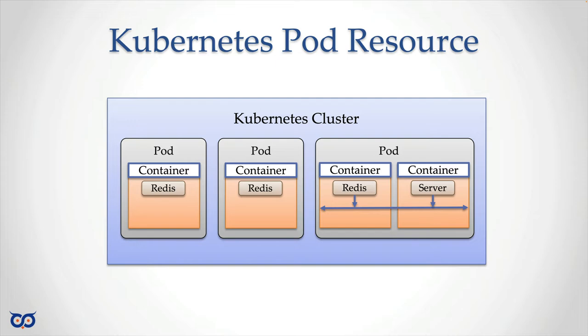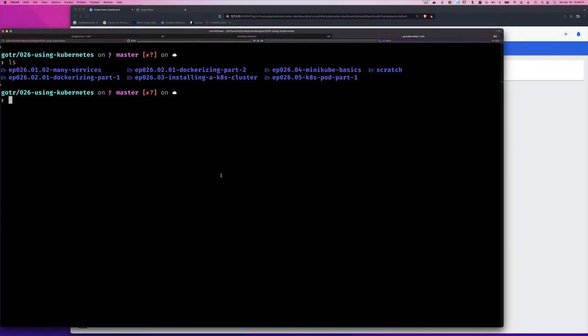What we saw before with the kubectl run command is that we could only create one container per pod. Today we want to run our full stack in Kubernetes just as we did in Docker Compose, but first we need to get our containers running with our own image. Let's jump in — here I am in my Kubernetes directory from Part One.